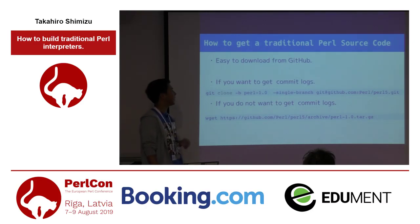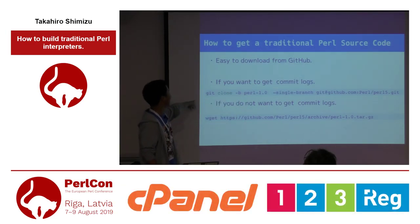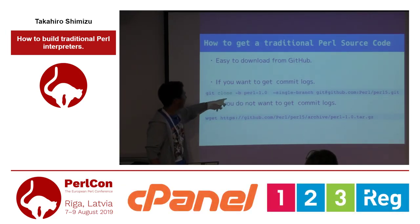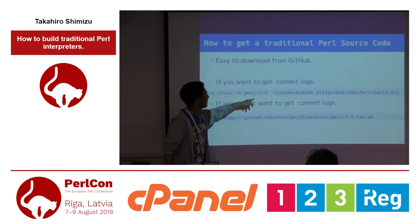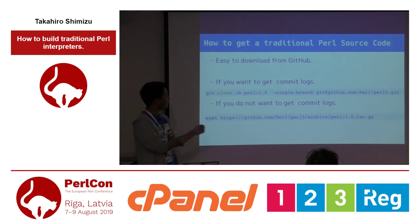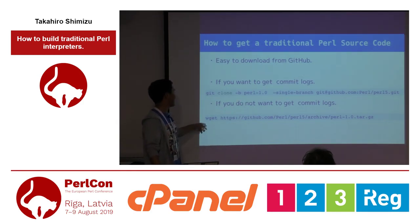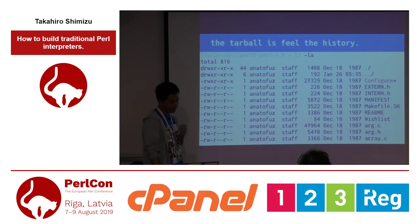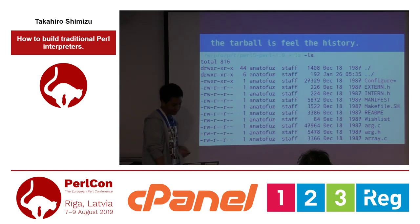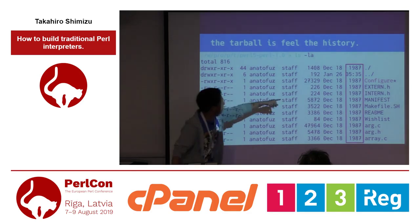How to get traditional Perl source code: if you want to get git commit logs, you can use git clone with a single branch or a selected branch, for example Perl 1.0. If you don't want commit logs, you can use wget commands. When you execute ls -l, you can see the files were made in 1987.